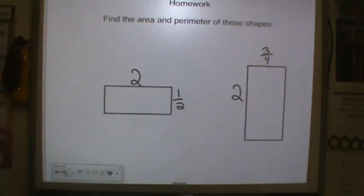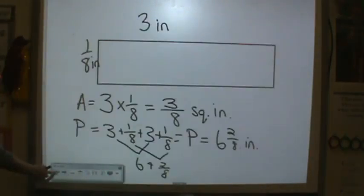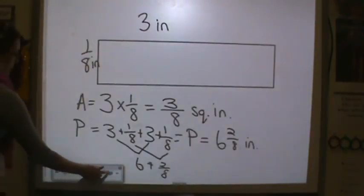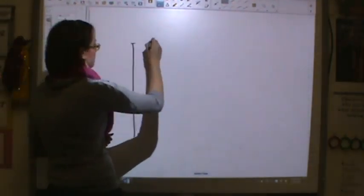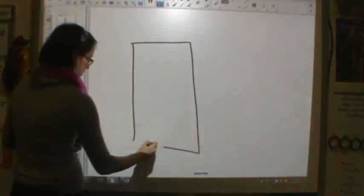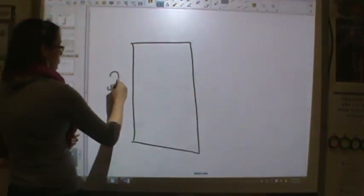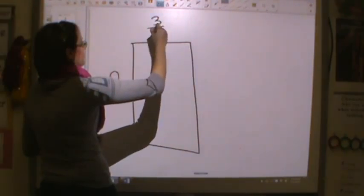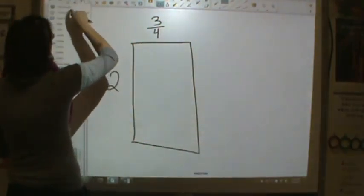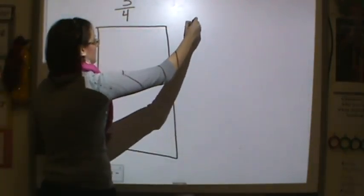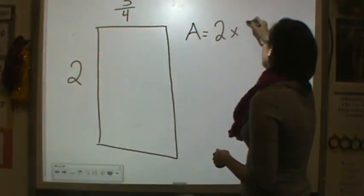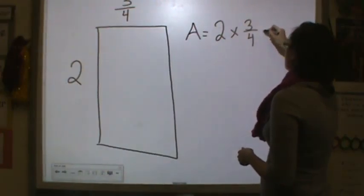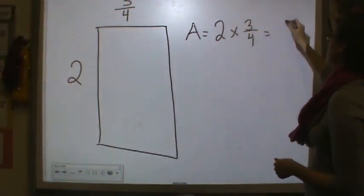All right, now let's do another one before I give you homework. Let's do a long rectangle, 2 by 3/4. So in this rectangle, the area would be equal to 2 times 3/4, which is equal to 2 times 3 is 6.